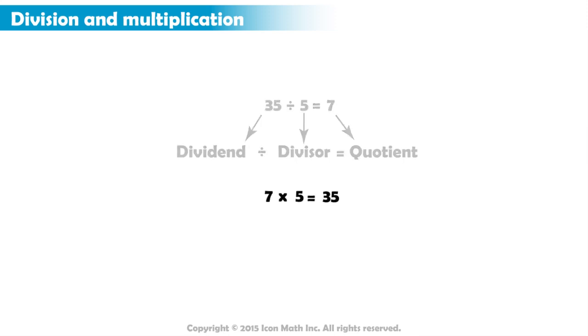And you have seen how 7 times 5 equals 35. So, using the same names for those numbers, we say that the quotient times the divisor equals the dividend.